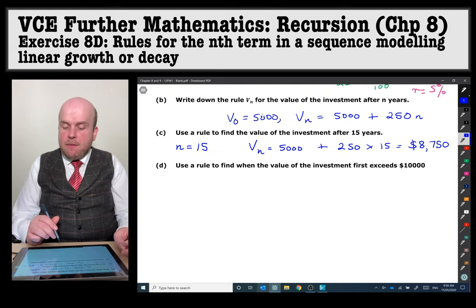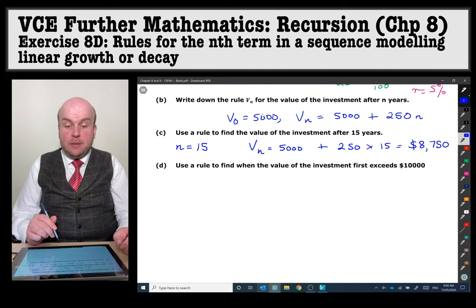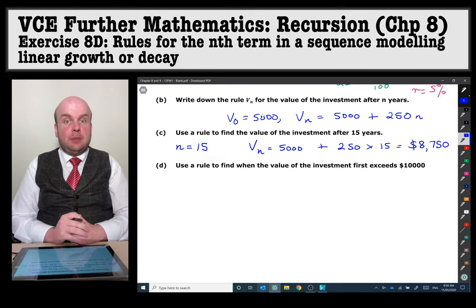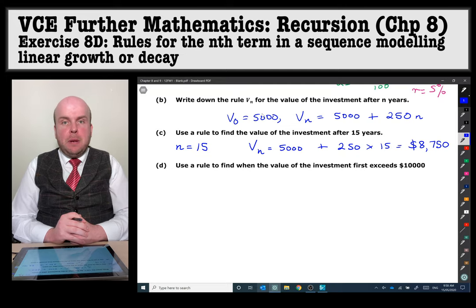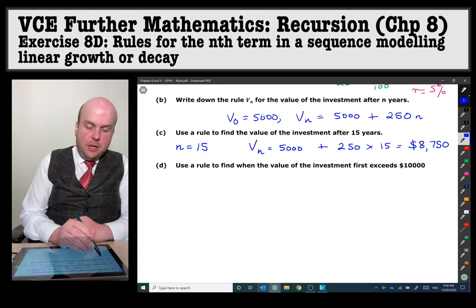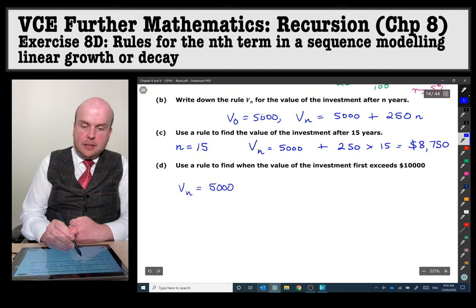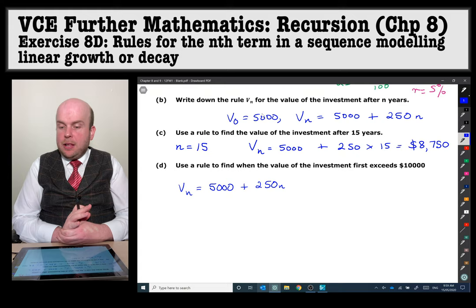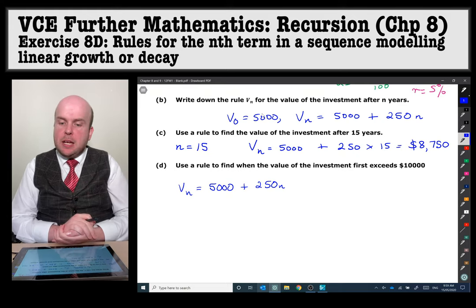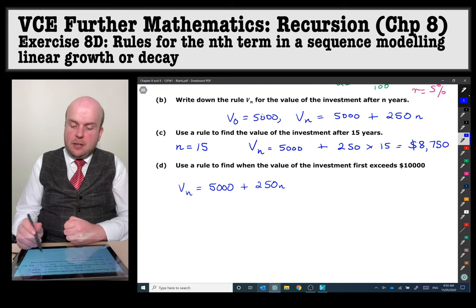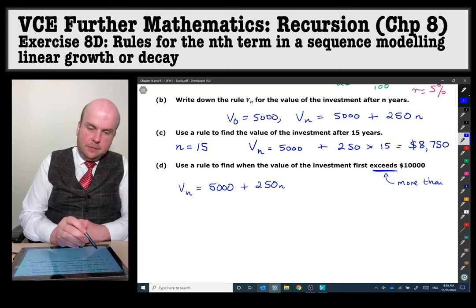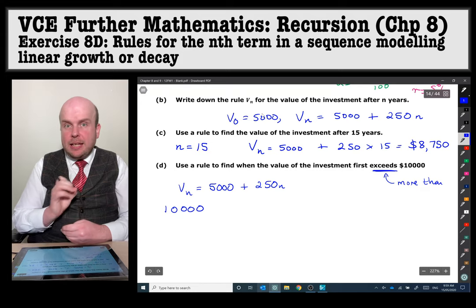Use a rule to find when the value of the investment first exceeds $10,000. So the fact that it says using the rule means that we have to actually manipulate or change the rule in some way to be able to get to our answer. My suggestion here would be to use the solve function on the CAS calculator. So the rule we've established is 5,000 plus 250n. Now what we're going to do is we're going to solve for when the value of the years or the total value of the investment is more than $10,000. So you see the word exceeds, that means more than $10,000.